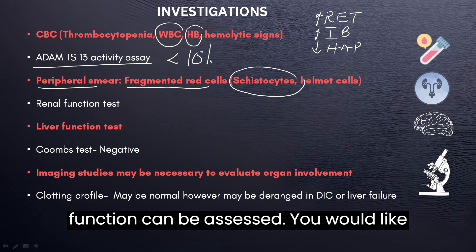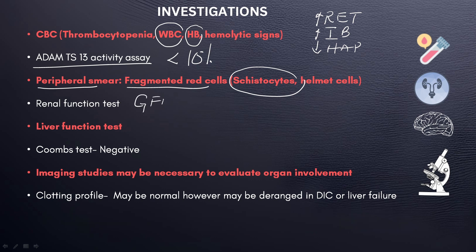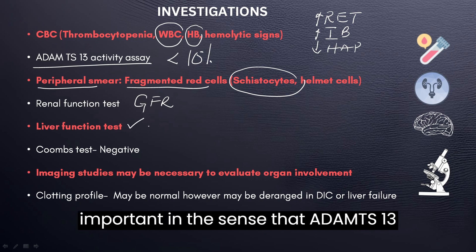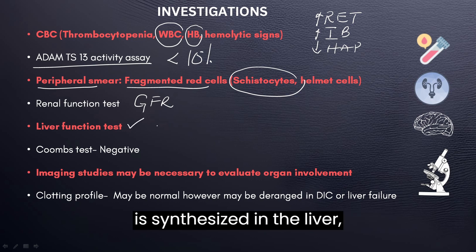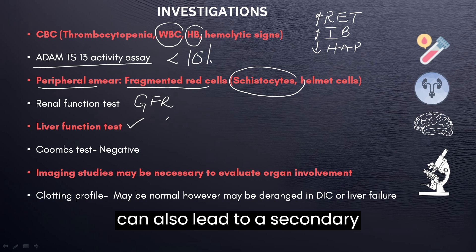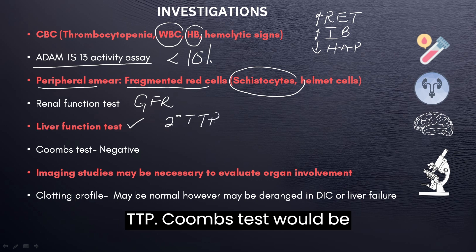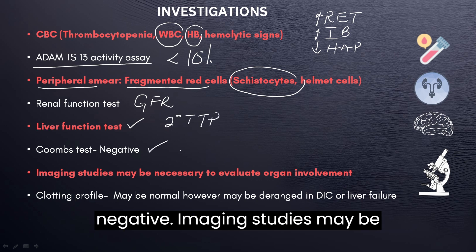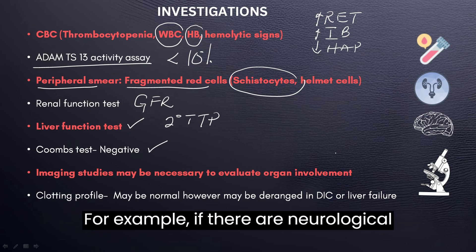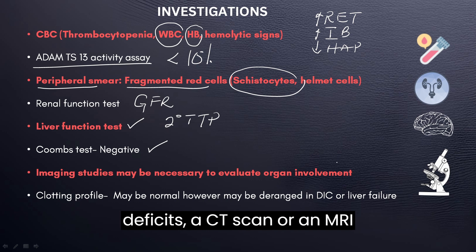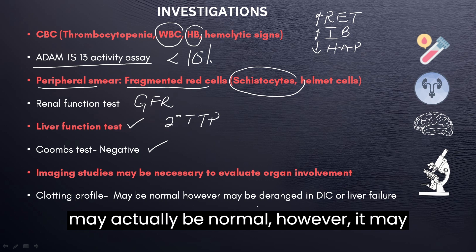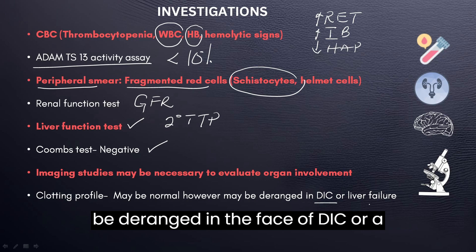Renal function can be assessed; you would check GFR, and creatinine and BUN may also be elevated. Liver function tests are very important, since ADAMTS13 is synthesized in the liver — liver failure can lead to secondary TTP. The Coombs test would be negative. Imaging studies may be necessary to evaluate organ involvement; for example, if there are neurological deficits, a CT scan or MRI may be required. The clotting profile may actually be normal, but may be deranged in the face of DIC or liver failure.